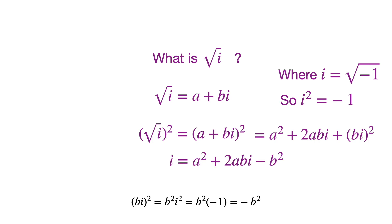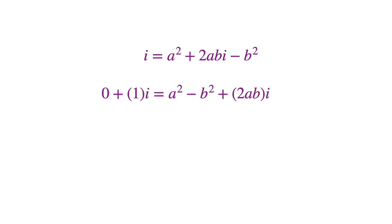So we can write that as i is a squared plus 2abi minus b squared. So on the left, we can write i is 0 plus 1 times i. And let's rearrange the terms on the right. So the real part of the complex number on the left must be 0, and on the right must be a squared minus b squared.